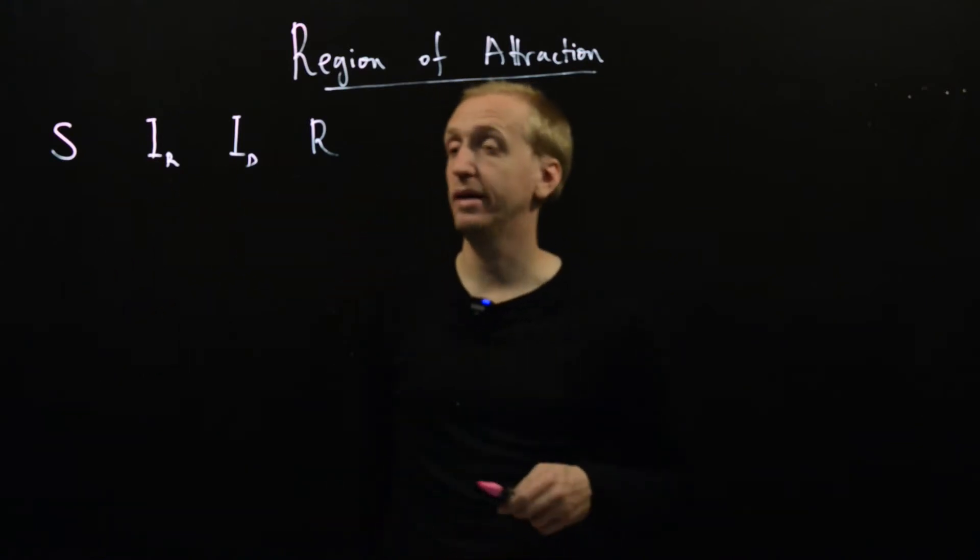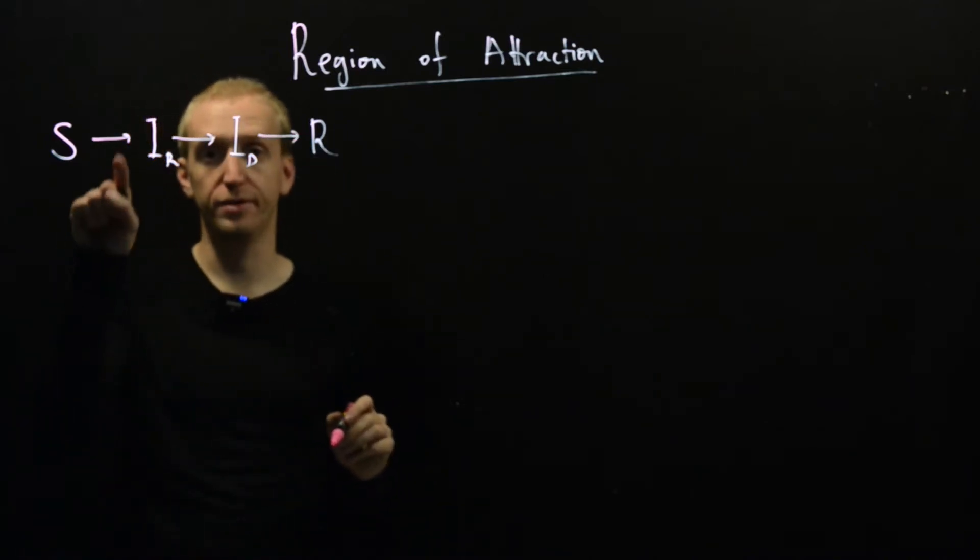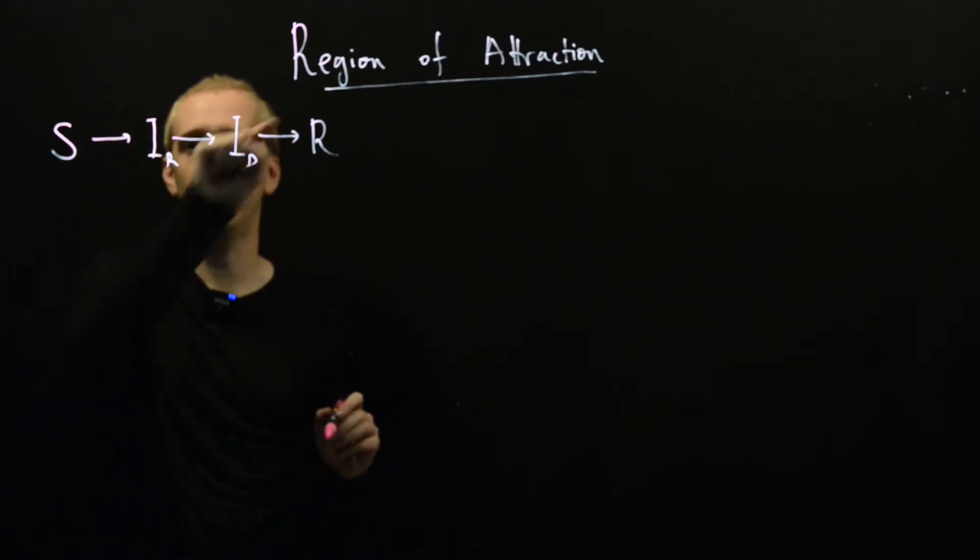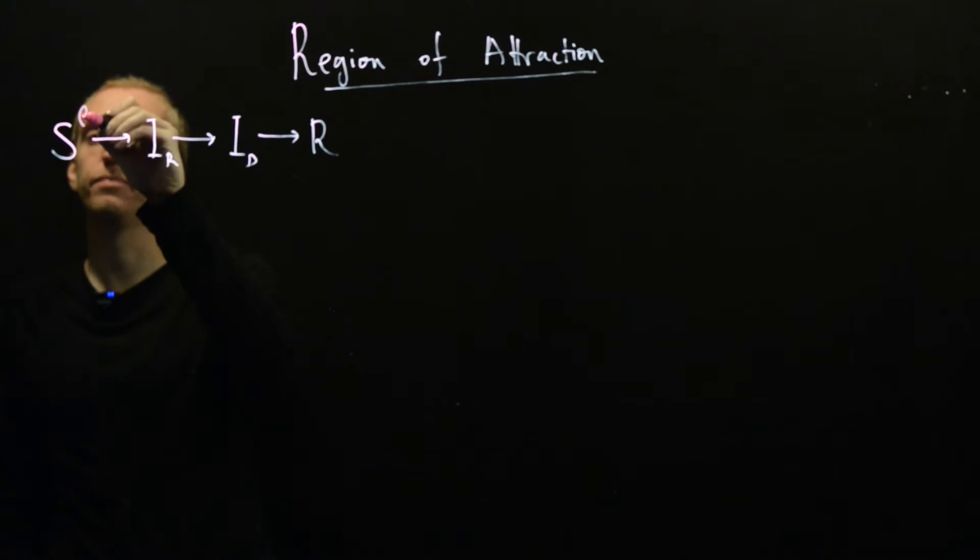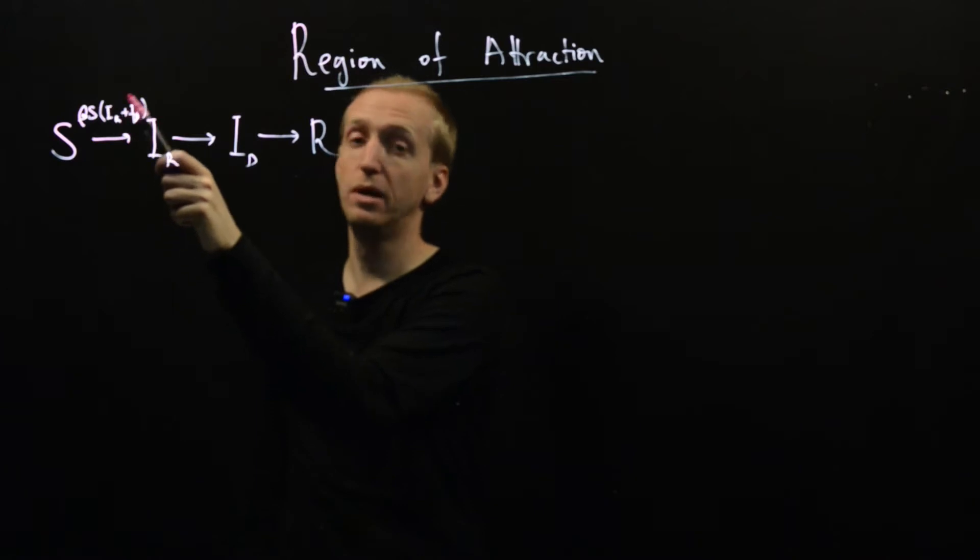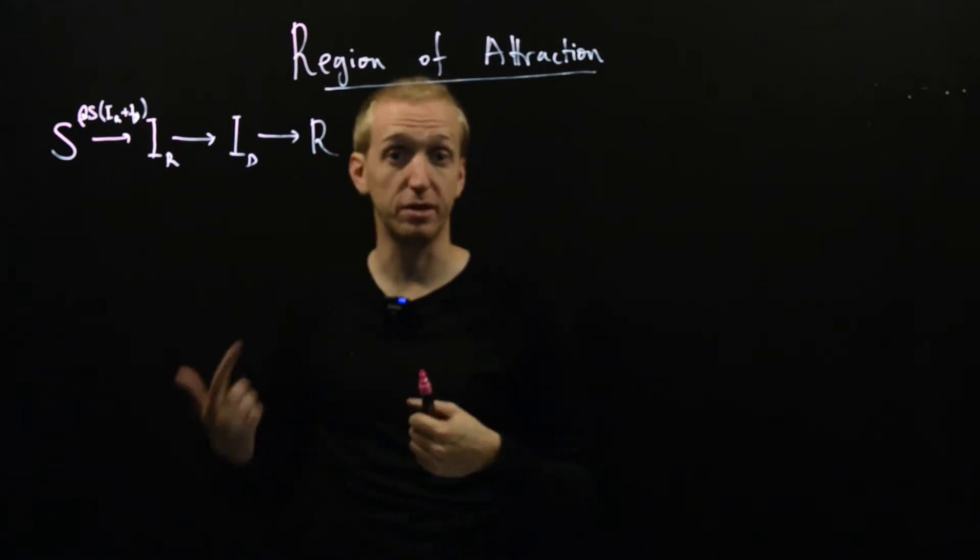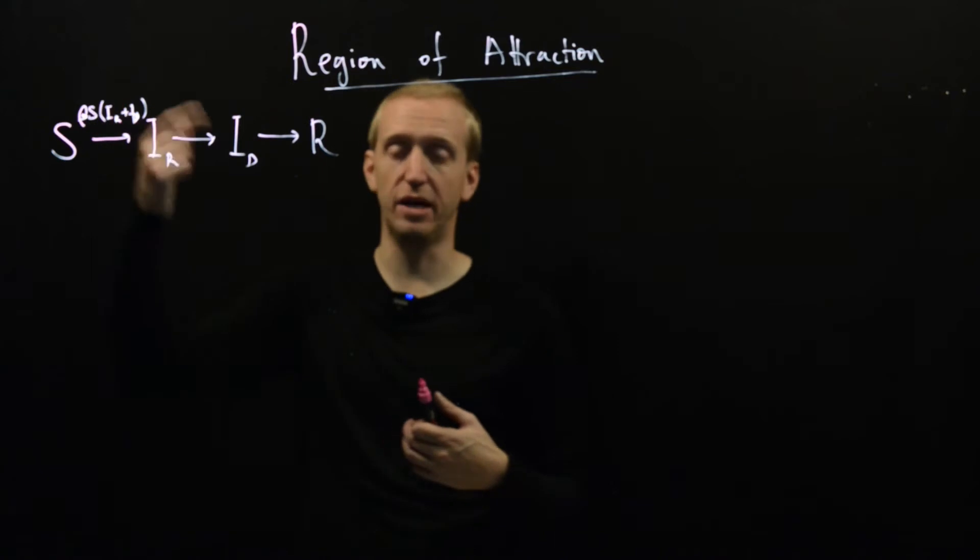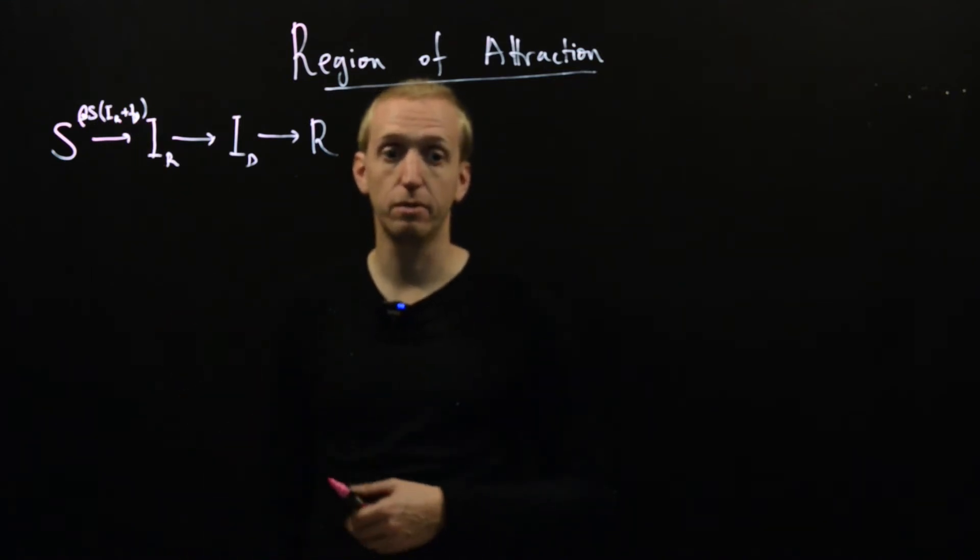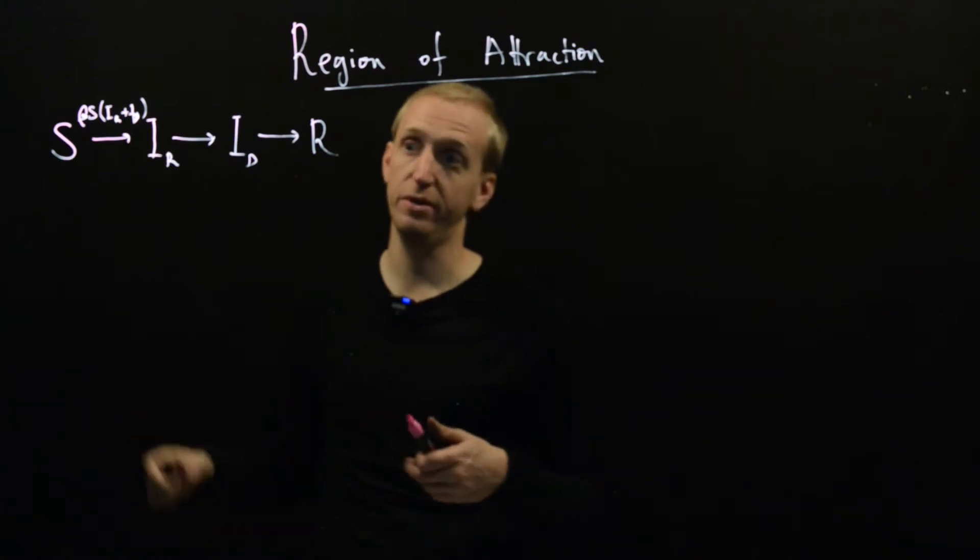And the rates at which people go through these different groups - this is called a compartmental model and it's quite common to denote rates as values above arrows. Here we have beta, S, and IR plus ID, and this rate is modeling the rate of infection. And you see there's a multiplication between the number of susceptible people and the number of people who are infectious. So this is supposed to capture the behavior of infectious people and susceptible meeting.